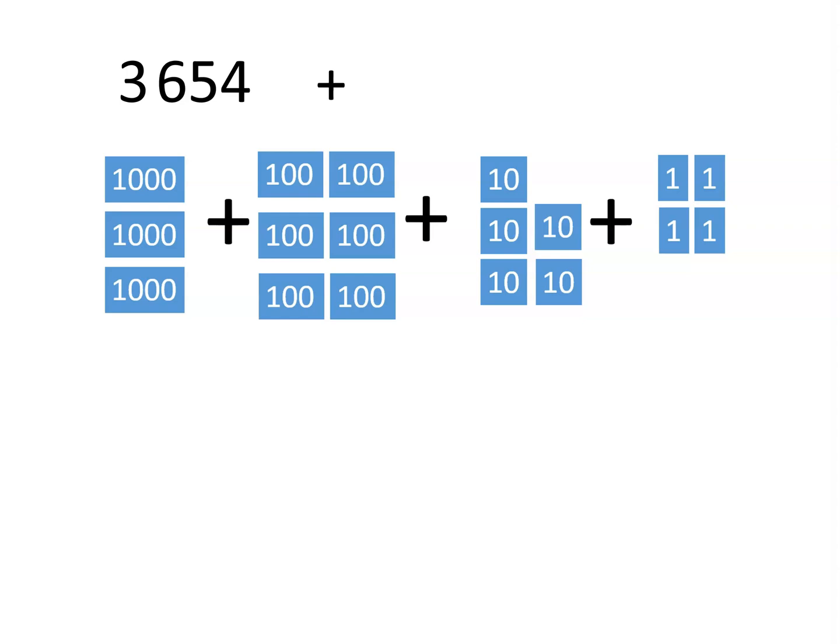Then, let's add 2,762, pictured in orange, with 2 thousands, 7 hundreds, 6 tens, and 2 units.